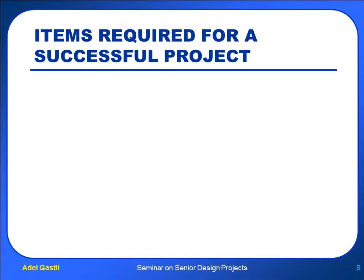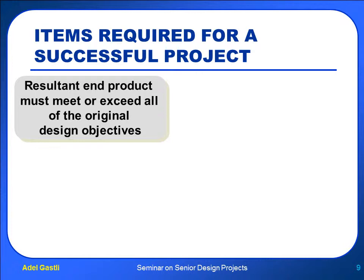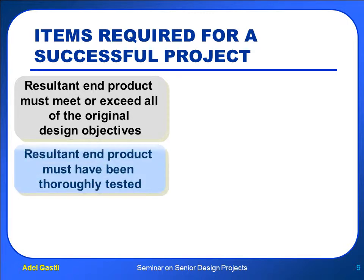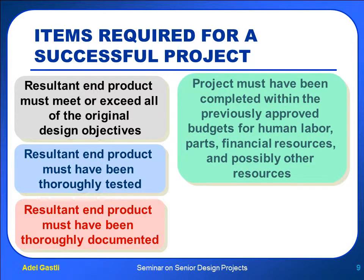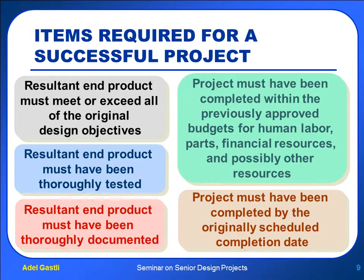Now let's see what are the most important items required for a successful project. For a project to be considered successful, the end product must meet or even exceed all the original design objectives set from the beginning. Also, the end product must have been thoroughly tested and thoroughly documented. So it's about meeting the objectives, validating the results, and documenting all the results. Besides, the project must have been completed within the previously approved budgets for human labor, parts, financial resources, and possibly other resources. Finally, the project must have been completed by the originally scheduled completion date — delivering on time is very important.